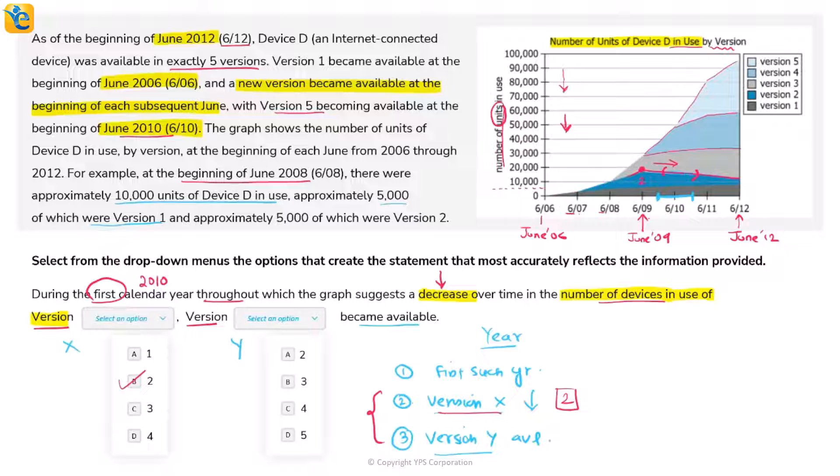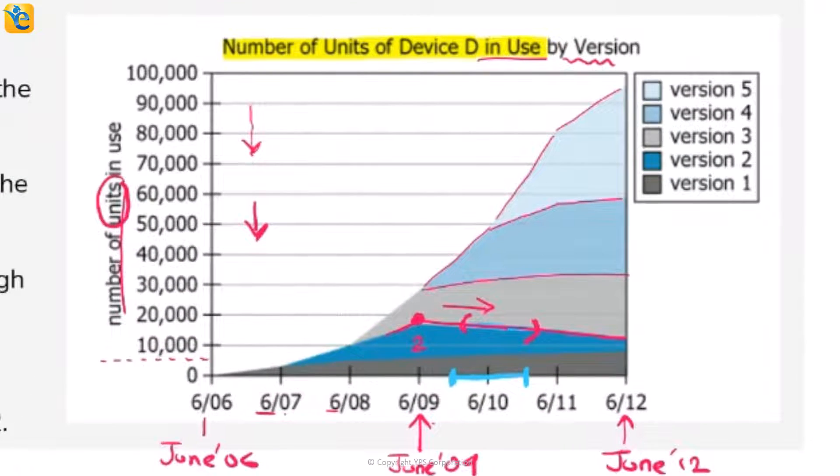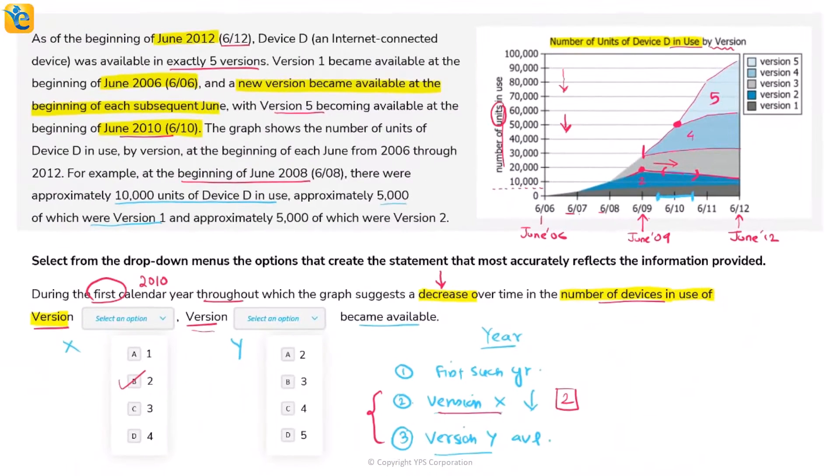For the second blank, during 2010, which version became available? The only version that became available was Version 5. Version 4 already came in June 2009, so it didn't become available in calendar year 2010. Therefore, Version 5 became available in this calendar year.